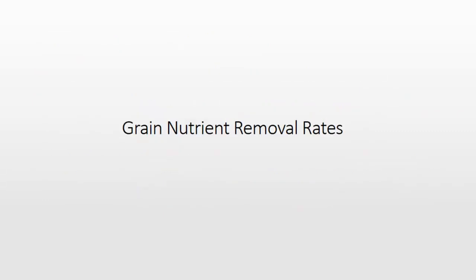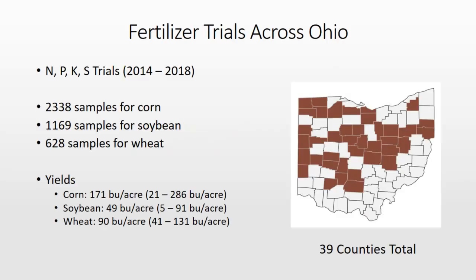Now I want to talk about grain nutrient removal rates — maybe a little less contentious. Across these fertilizer trials, we spent a lot of money and time analyzing grain samples in labs — literally grabbing a grab-sample of grain, sending it to the lab, and getting a total nutrient concentration. We have a couple thousand corn samples, 1,200 soybean samples, and a little over 600 wheat samples. You can see our yields here — very respectable yields with quite a bit of range across these five years of trials.